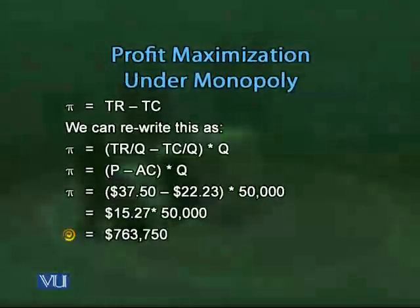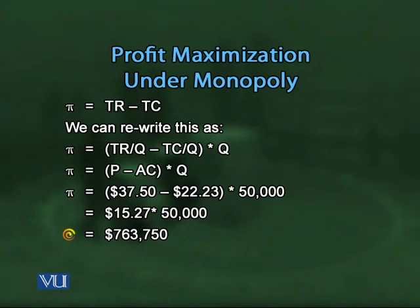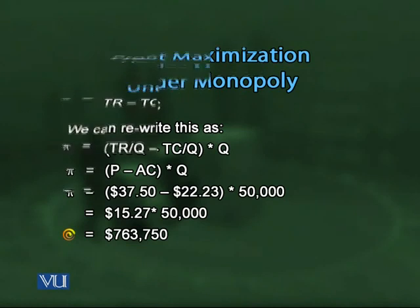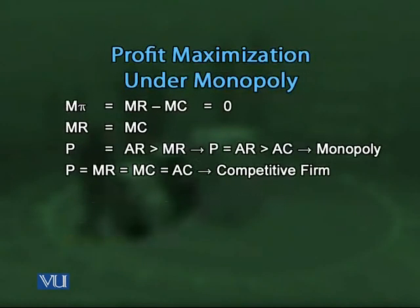Per unit profit equals price minus average cost, which is $37.50 − $22.23 = $15.27 per unit. Multiplying by 50,000 units gives maximum profit of $763,750. Using marginal analysis: marginal profit = MR − MC = 0, i.e., MR = MC. Price (average revenue) is greater than marginal revenue, which implies that under monopoly, price is always greater than marginal revenue.